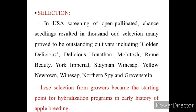The first method is selection. In USA, screening of open-pollinated chance seedlings resulted in thousands of odd selections. Many proved to be outstanding cultivars including Golden Delicious, Delicious, Jonathan, Rome Beauty, York Imperial, Stayman, Winesap, Yellow Newton, Northern Spy, and Gravenstein. These selections from growers became the starting point for hybridization programs in the early history of apple breeding.